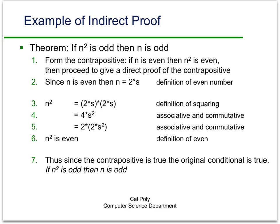Now this is the one thing. You've got to remember to do the first step and the last step. Since the contrapositive is true, then the original conditional is true. And so if n squared is odd, then n is odd.